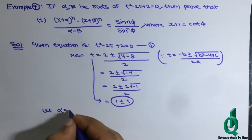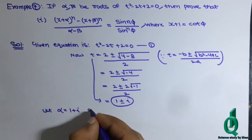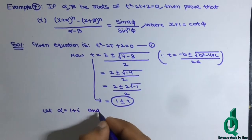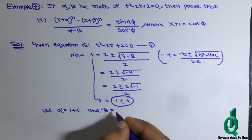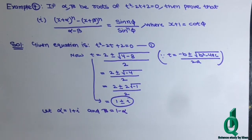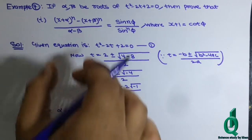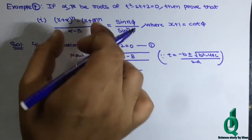So let alpha = 1 + iota and beta = 1 - iota. अब हमने जो prove करना है उसमें से left hand side pick करना है, और alpha, beta की value हमारे पास आ गई।